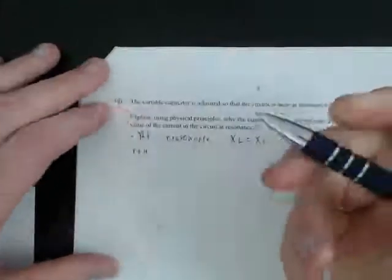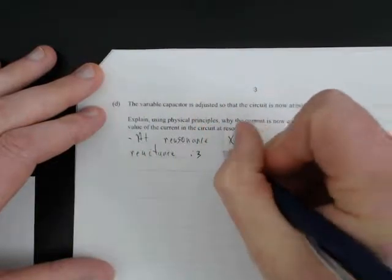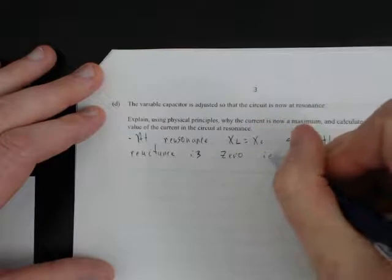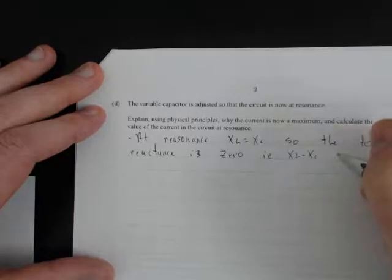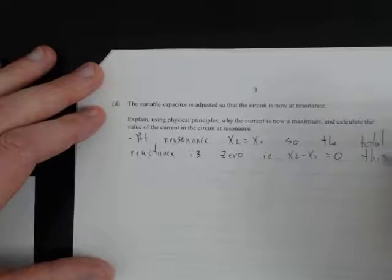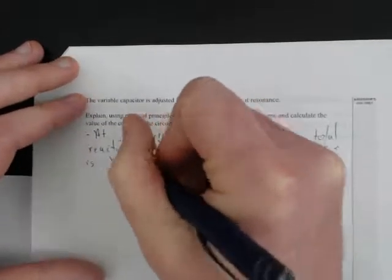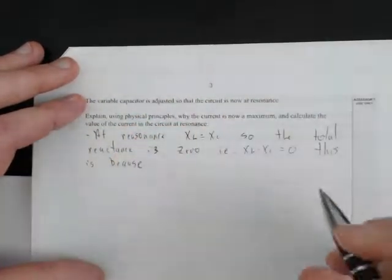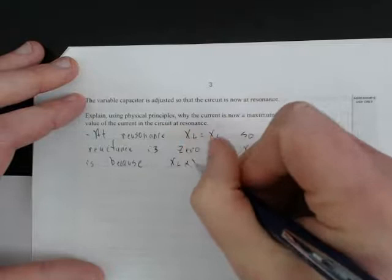Setting our two reactances together, the total reactance is zero. That is, XL minus XC equals zero. This is because the reactance of the inductor and the reactance of the capacitor are...